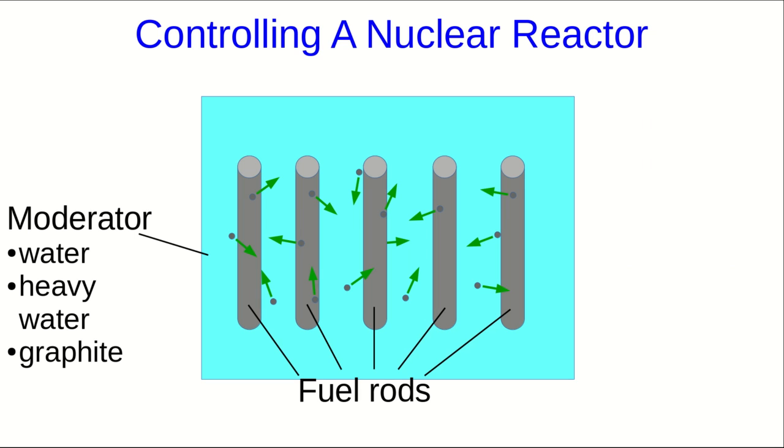What's needed is a moderator. Common choices of moderator are water, heavy water, or graphite. The common feature being that these all contain atoms of very low atomic mass. The neutrons collide with these atoms and give up some of their energy to them, and as a result, after a few collisions, they're moving much more slowly. These slow neutrons are able to be absorbed by the uranium.